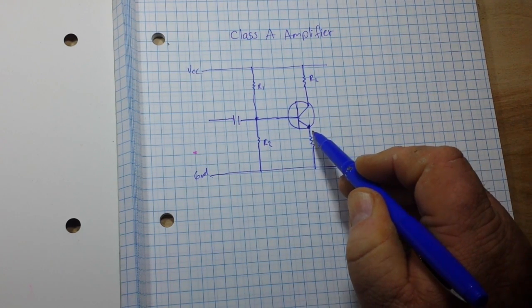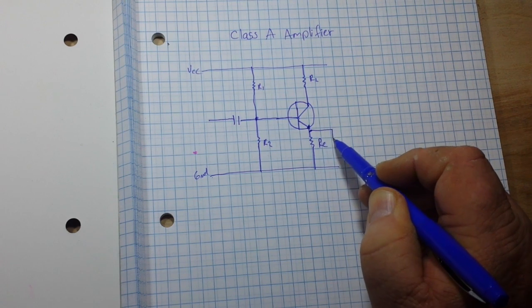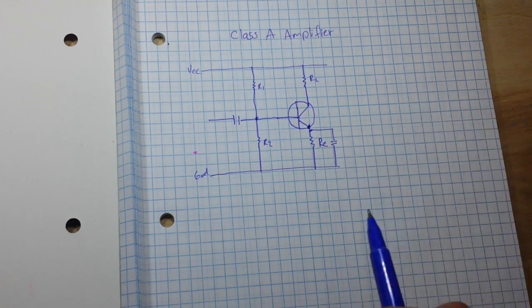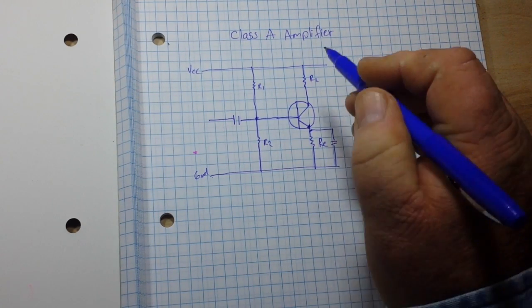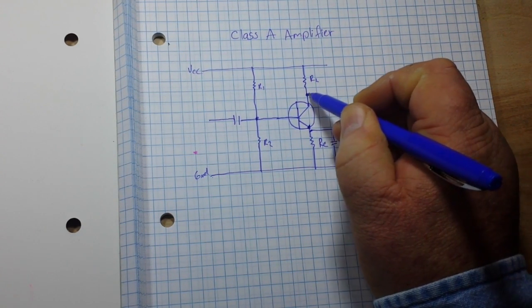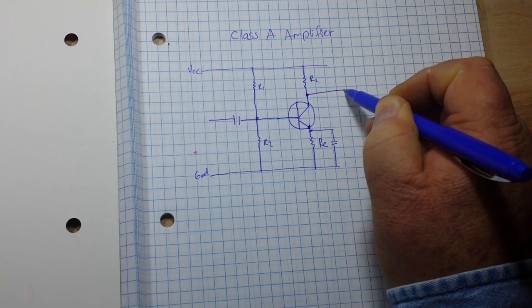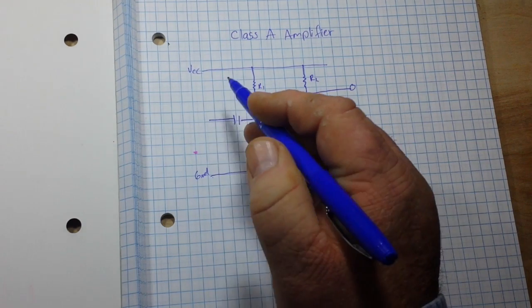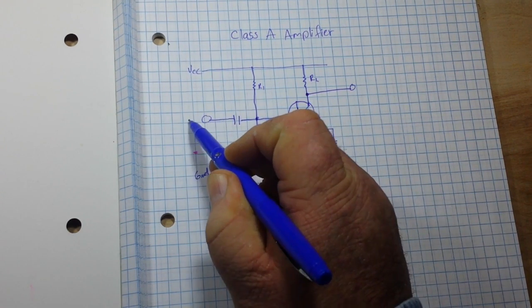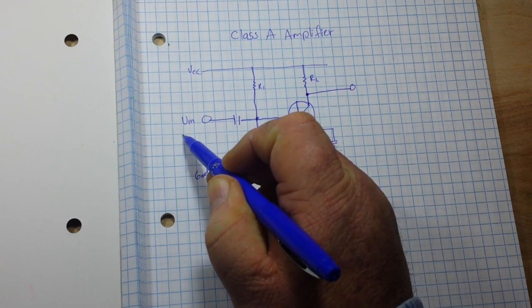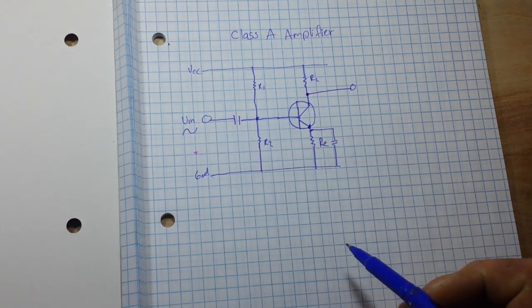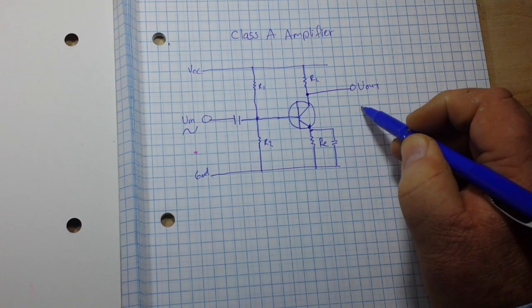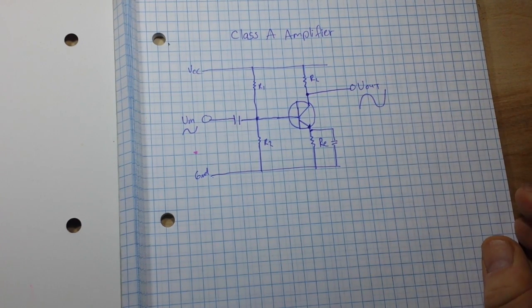We are also going to want to use another capacitor on the emitter for a little bypassing. And finally, we are going to take our output right there before the collector. So we have our input here, which will be a smaller sine wave, and we have our output here, which would be the larger sine wave.